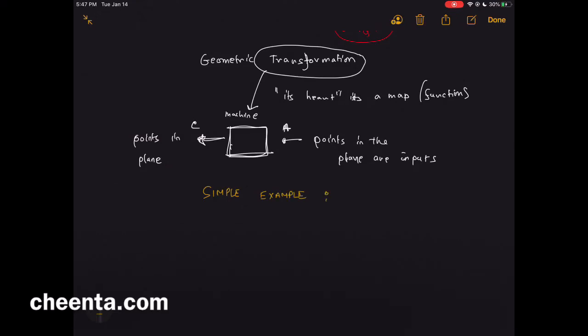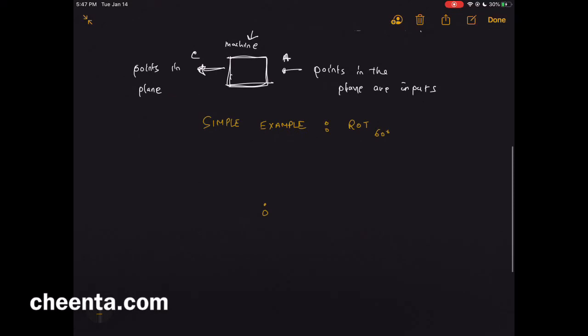Rotation by 60 degrees. If you fix a point O which is the center of the plane, take any point A, this is your input point. Your output will be: rotate this vector or this segment OA about O by 60 degrees. Wherever you reach, that is the output point A prime. So you have this input point and output point. The process in which the input becomes the output is this rotation by 60 degrees, and that is my geometric transformation. In this case, this is just a very easy example of a geometric transformation.